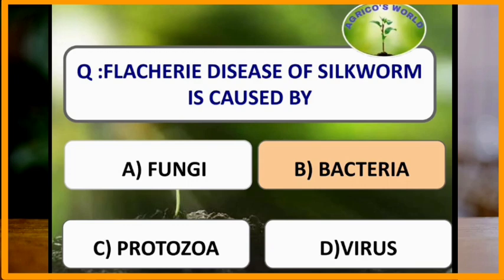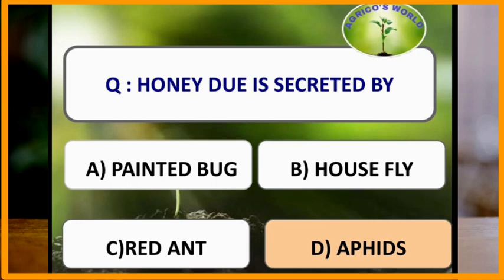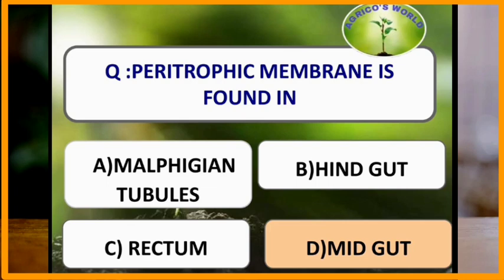Flacherie disease of silkworm is caused by bacteria. Honeydew is secreted by aphids. Peritrophic membrane is found in the midgut of the digestive system.